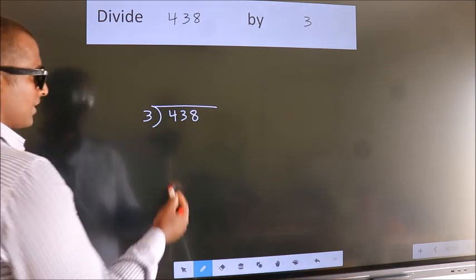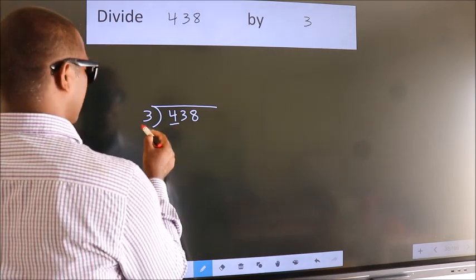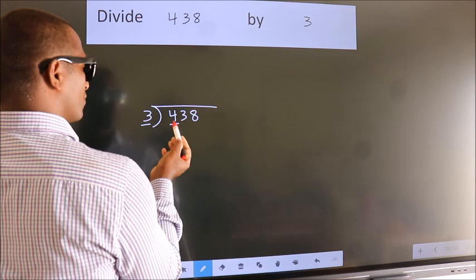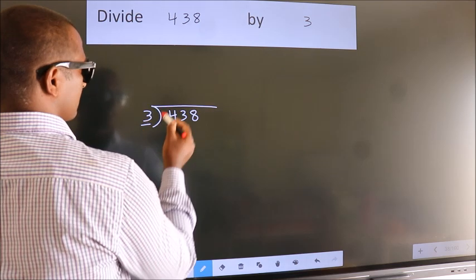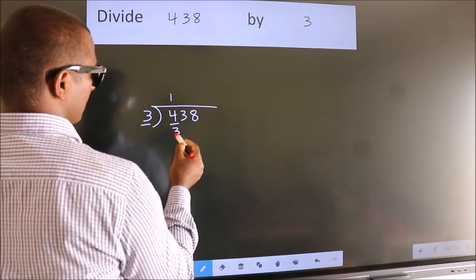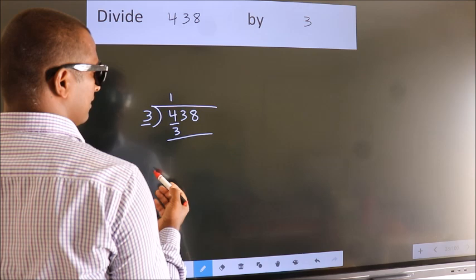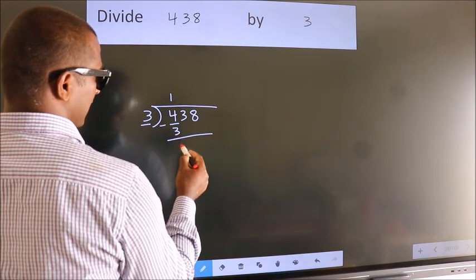Next. Here we have 4, here 3. A number close to 4 in the 3 table is 3 once 3. Now, we should subtract. We get 1.